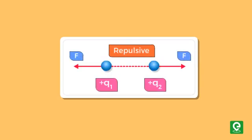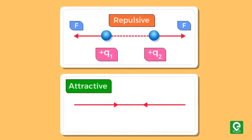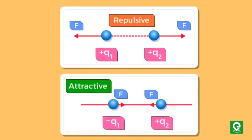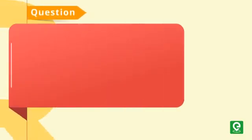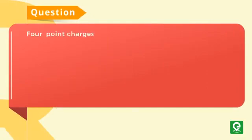Let's take an example to understand the application of Coulomb's law. Question: Four point charges, each of plus Q charge, are rigidly fixed at the four corners of a square planar soap film of side a.